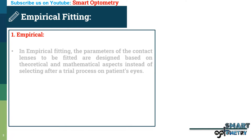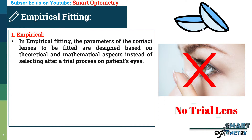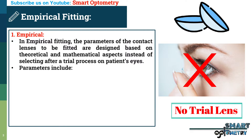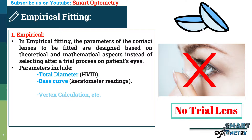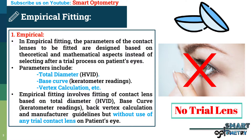In empirical fitting, the parameters of contact lenses to be fitted are designed based on theoretical and mathematical aspects, instead of selecting after a trial process on the patient's eye. Theoretical and mathematical parameters include total diameter or HVID (horizontal visible iris diameter), base curve or keratometer reading, vertex calculation, etc. That means empirical fitting involves fitting of contact lens based on total diameter, base curve, back vertex calculation, and manufacturer guidelines, but without using any trial contact lens on the patient's eye.